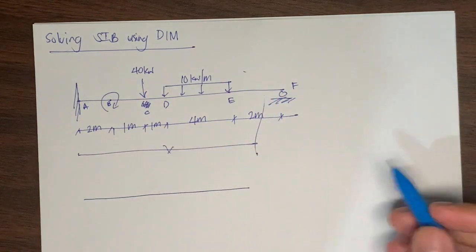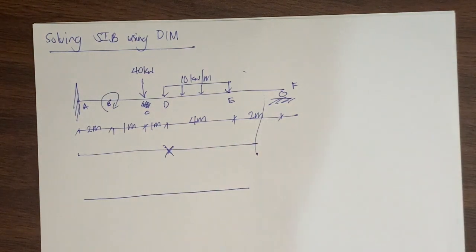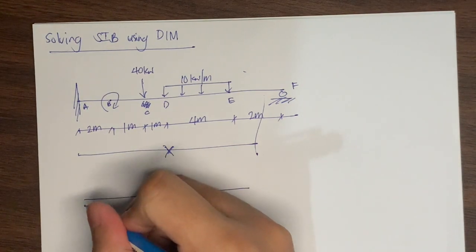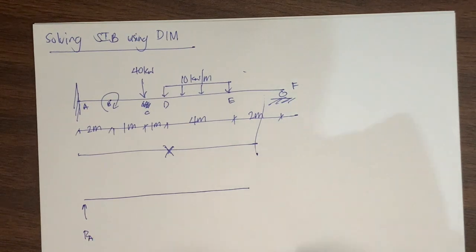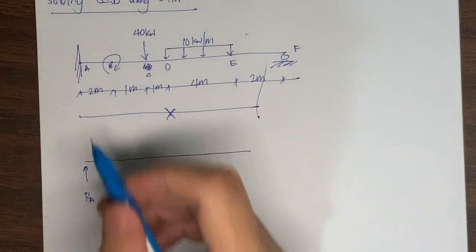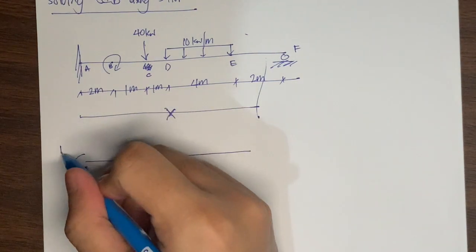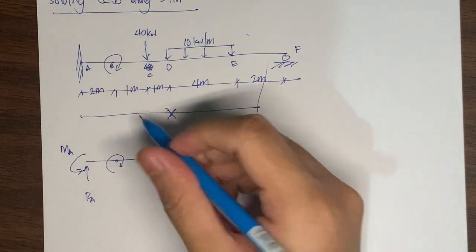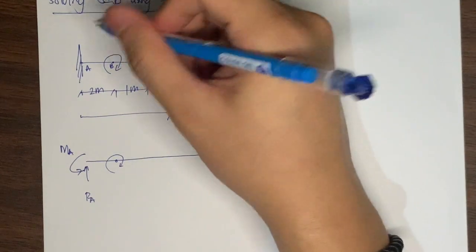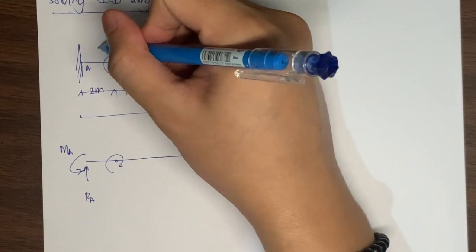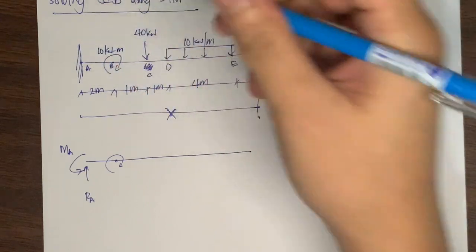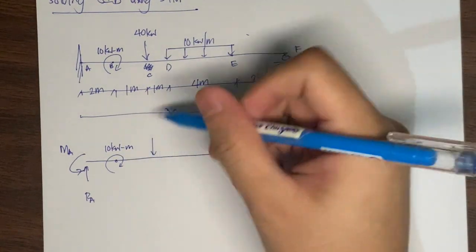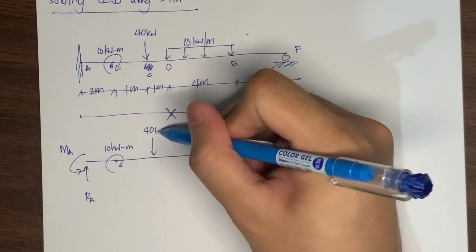Let's say this is your distance x. In our free body diagram, we have the reaction at A, the support moment or reactive moment at A, the applied concentrated moment of 10 kilonewton-meters, and the applied point load of 40 kilonewtons.